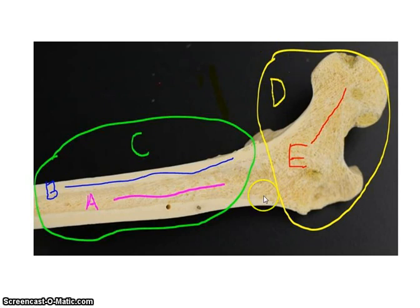So again, the regions: the ends are called the epiphysis, the shaft is called the diaphysis. Within the shaft, we have the medullary cavity. We have compact bone along here, and then primarily in the epiphysis, we have spongy bone.